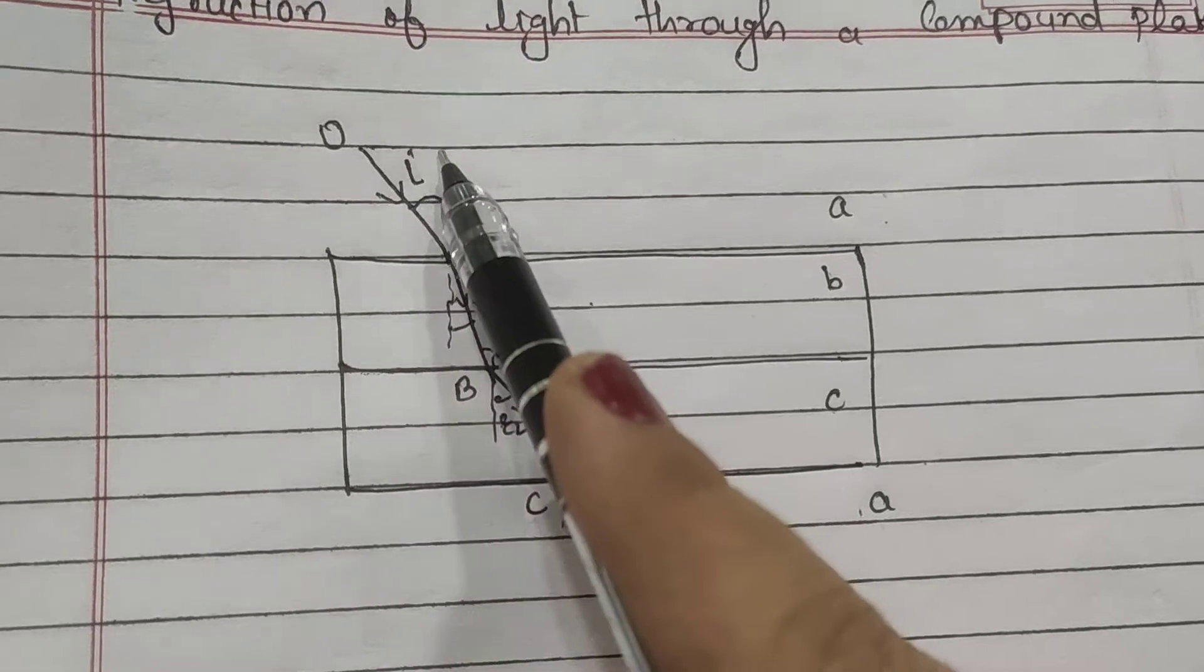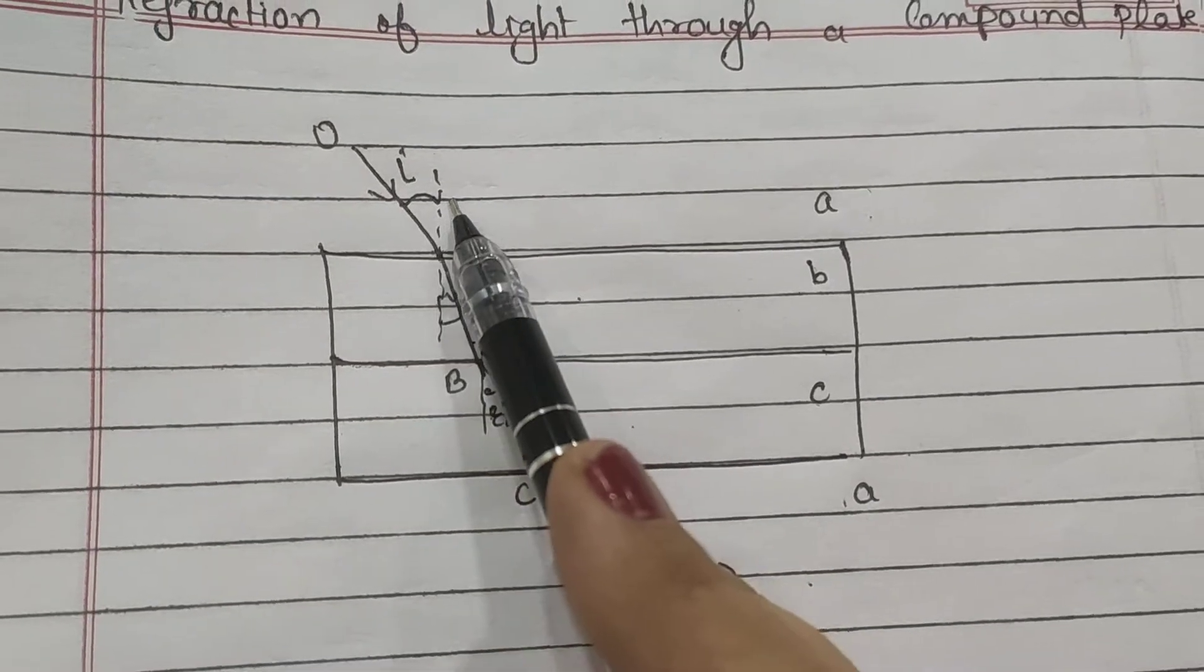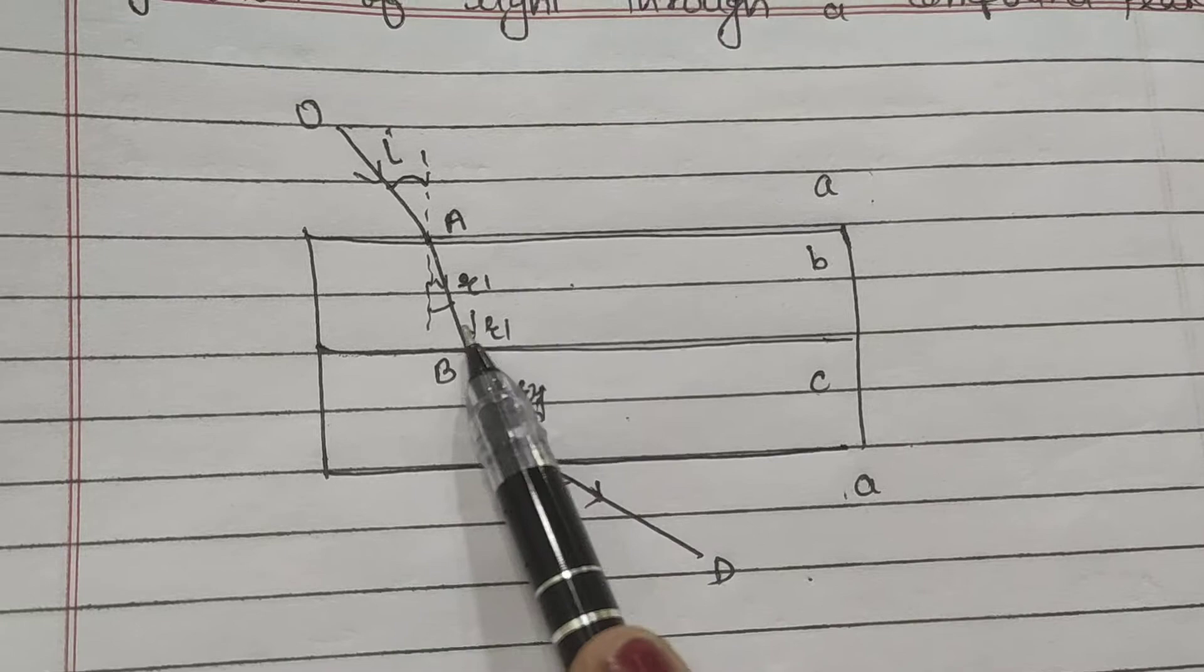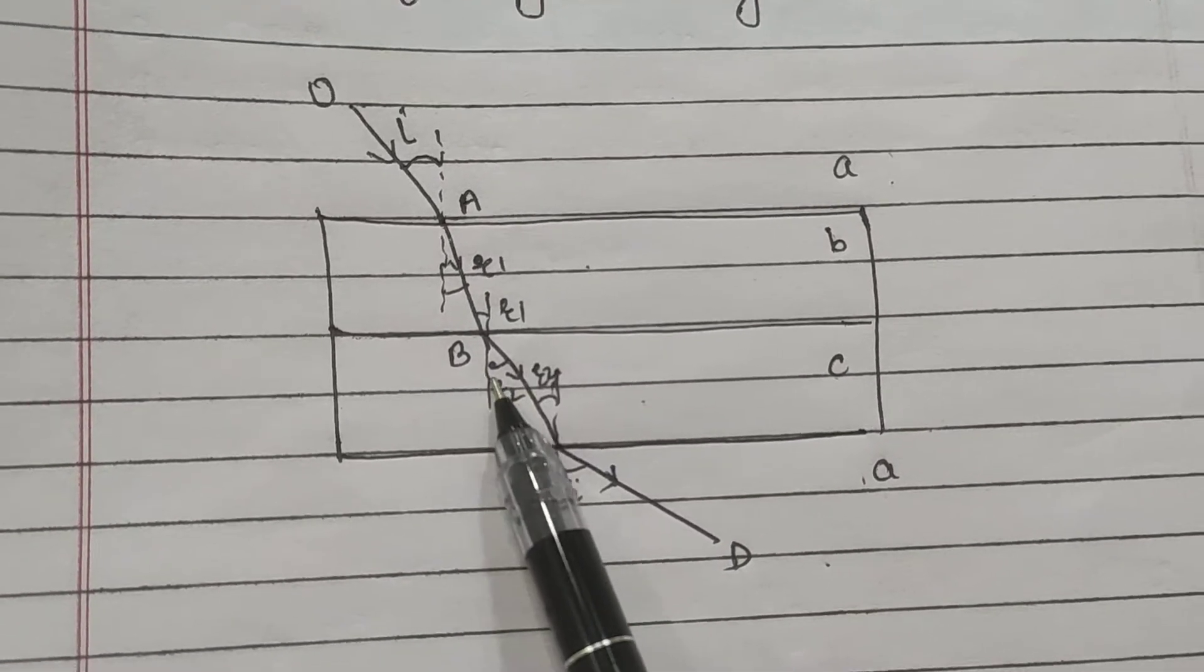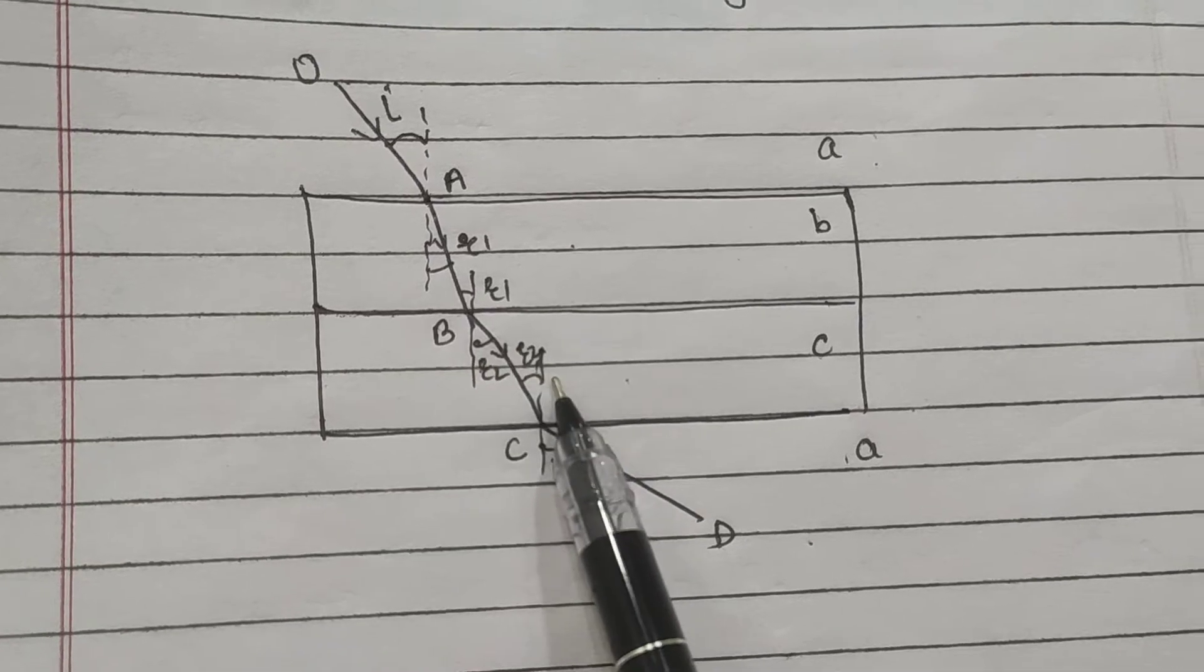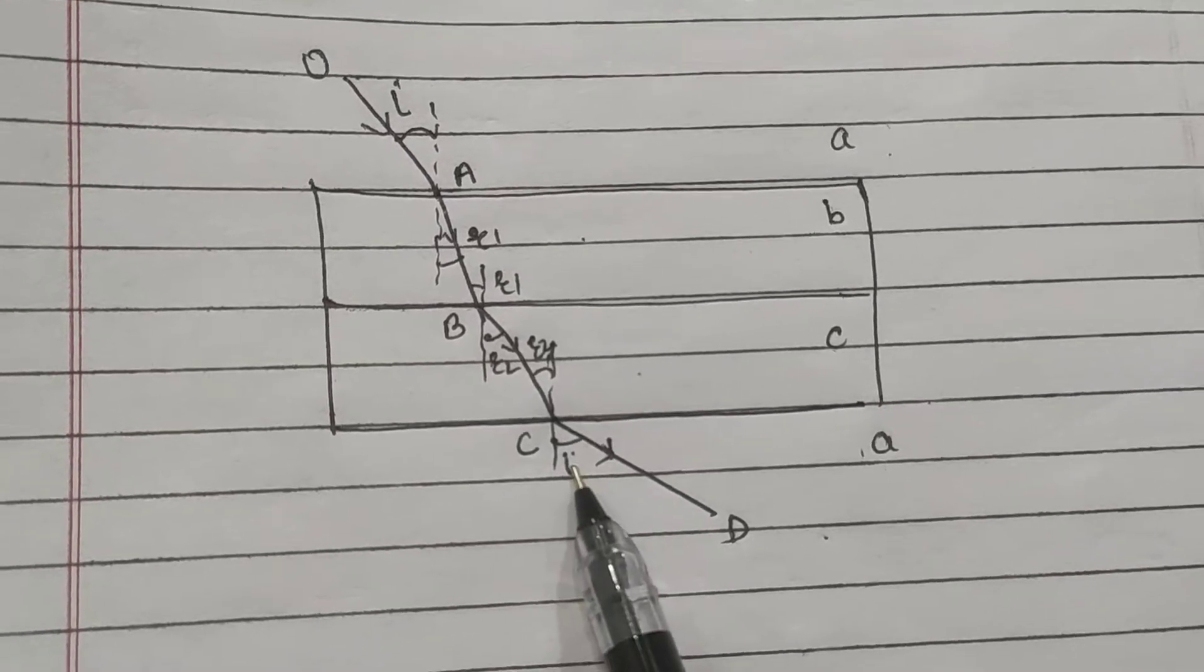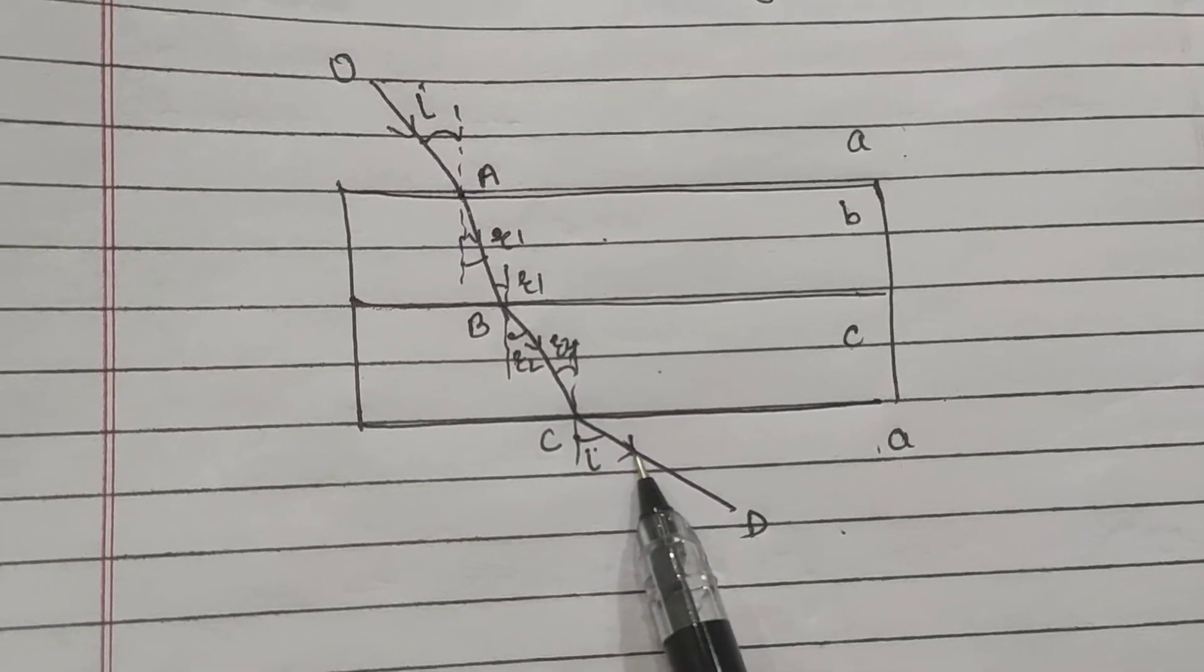These are the respective angles: angle of incidence I and angle of refraction R1. This will also be R1 as this corresponds to alternate angles, and let it is refracted at angle R2. Accordingly this will be R2, and finally it emerges out with the same angle of incidence.